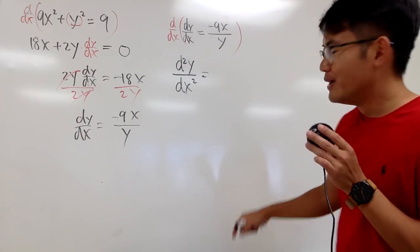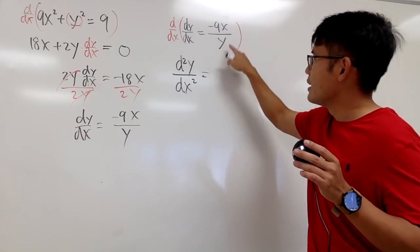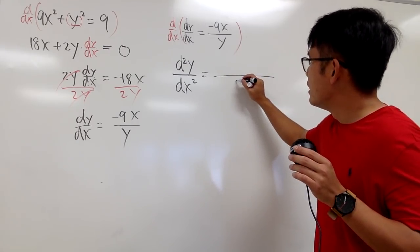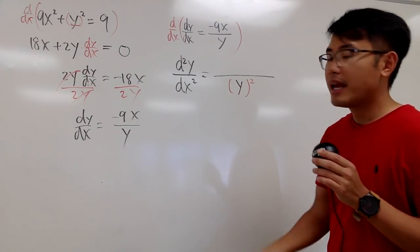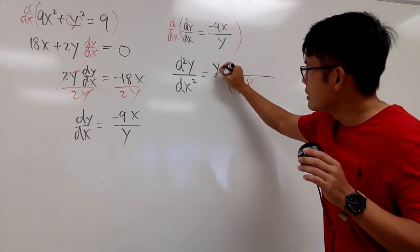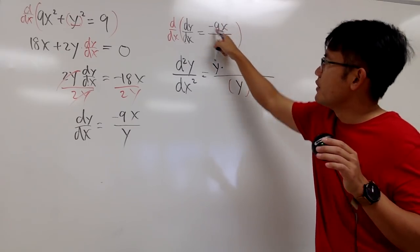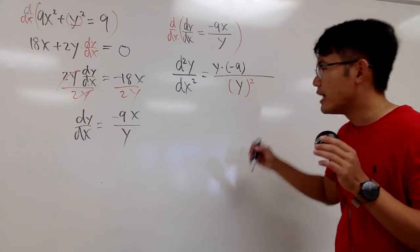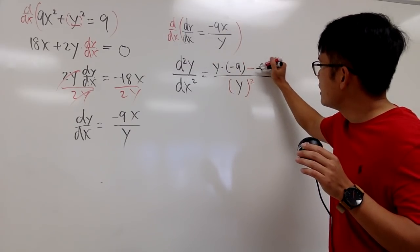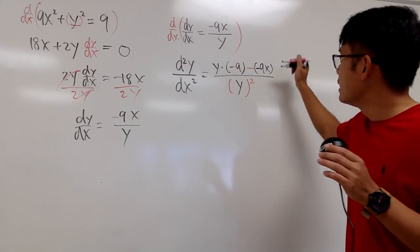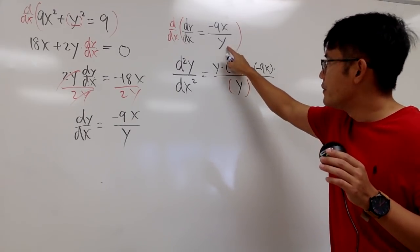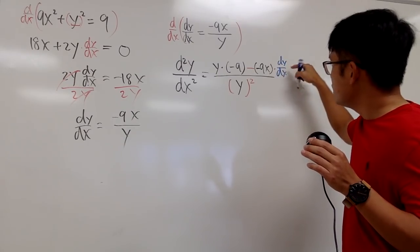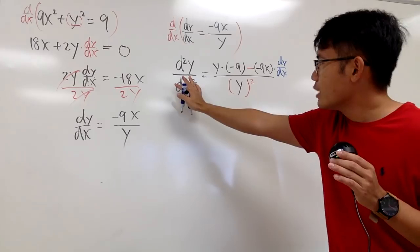On the right-hand side we have a quotient of negative 9x and y, so we use the quotient rule. Square the denominator, giving y squared. Then: bottom function y times the derivative of the top — derivative of negative 9x is negative 9 — minus the top function negative 9x times the derivative of the bottom, which is dy/dx.